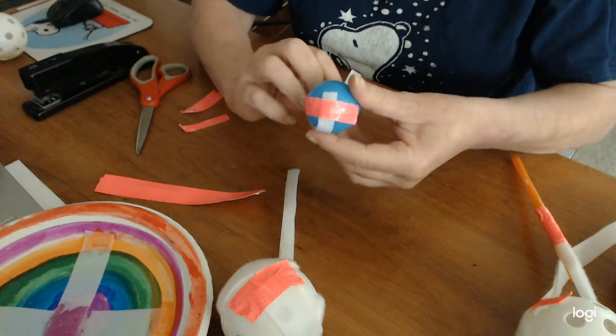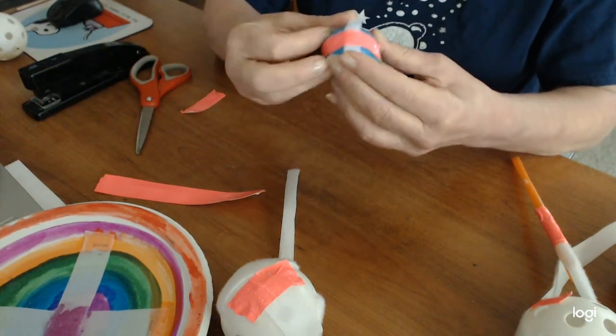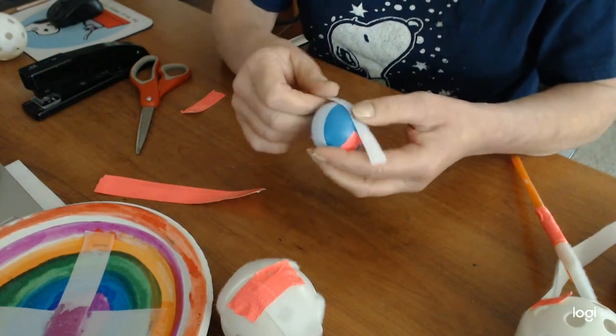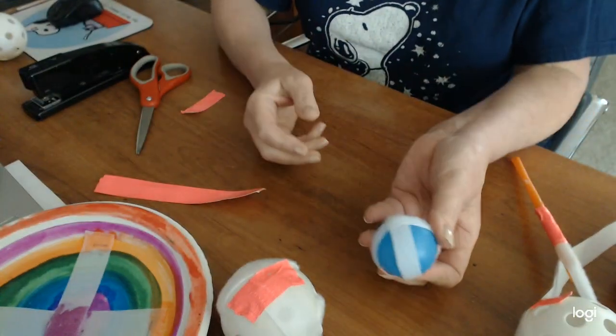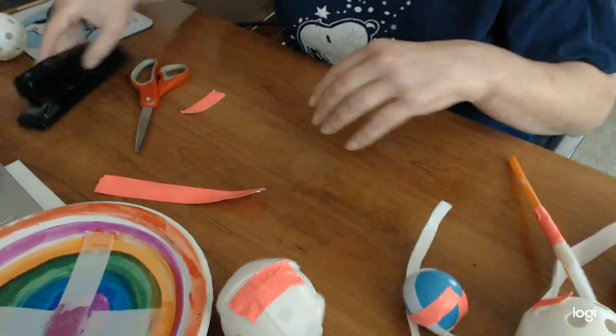So we're just going to wrap it around like that, piece of tape like that. And then take another strip and go the opposite way and tape that one on until you have something that looks like that. And that's it.